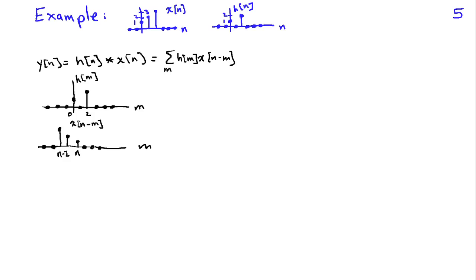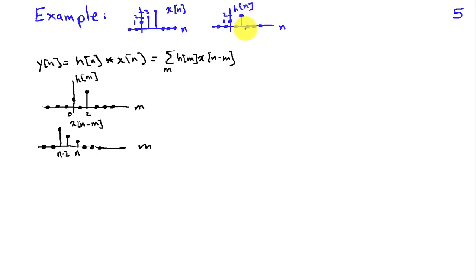We're going to look at an example and do three things: first compute the ordinary or linear convolution, then compute the circular convolution with N too small so we can't recover the linear convolution, and then choose a larger N and show that we do get the linear convolution. I've chosen simple sequences, both of length N equals 3. x of n is: 1 at time 0, 2 at time 1, and 3 at time 2. h of n is: 1 at time 0, 0 at time 1, and 2 at time 2.